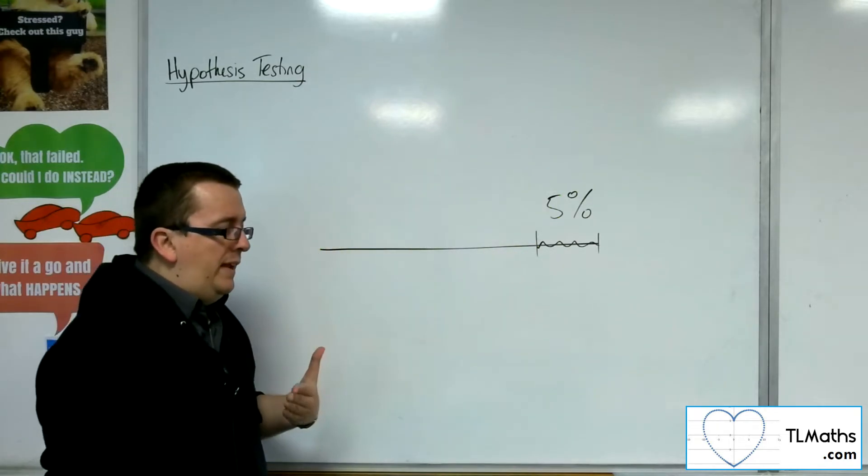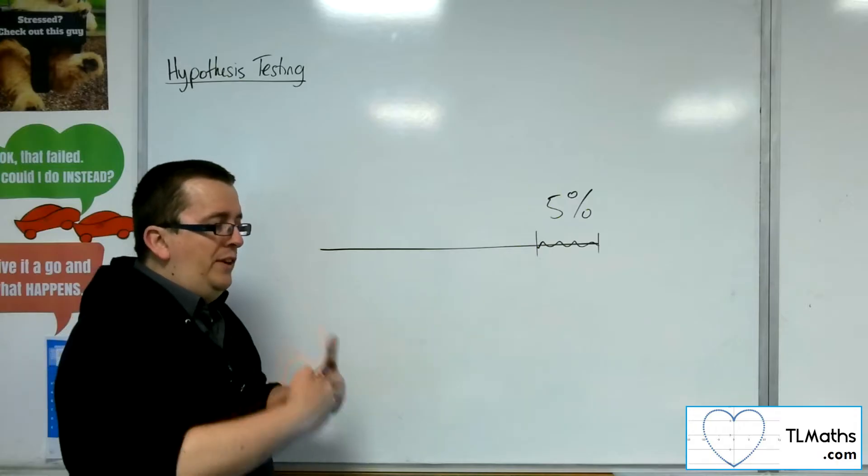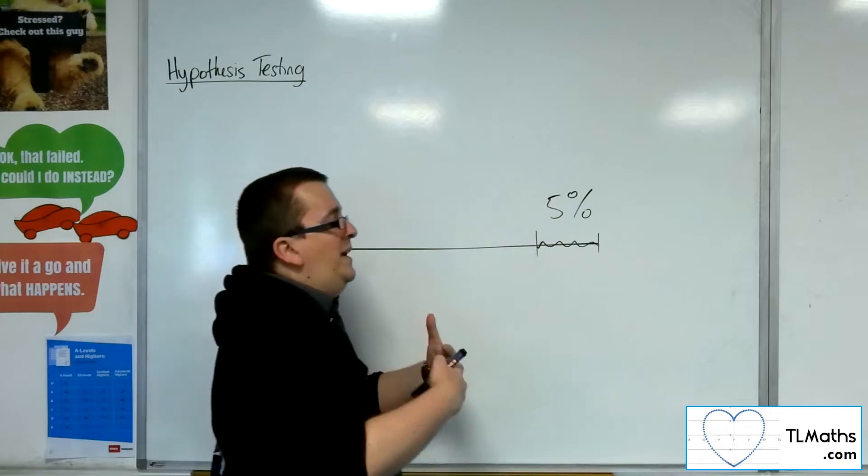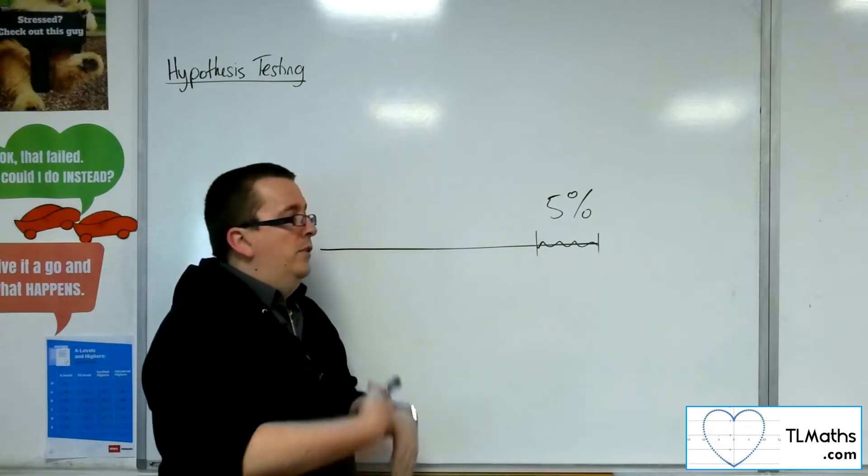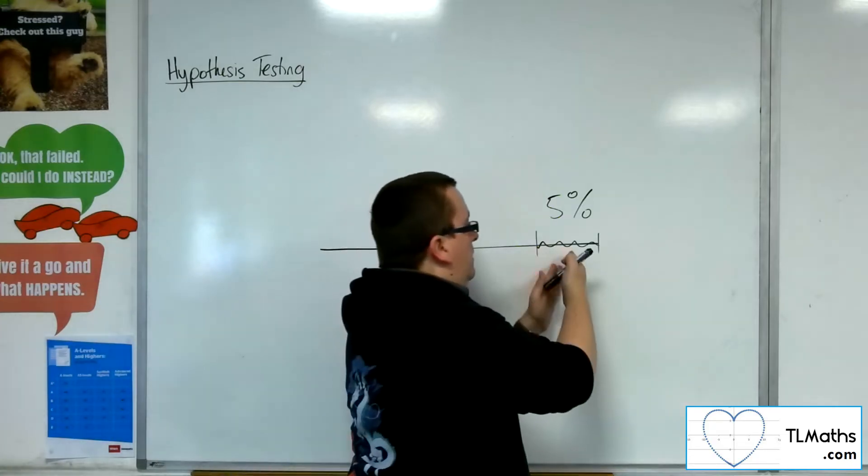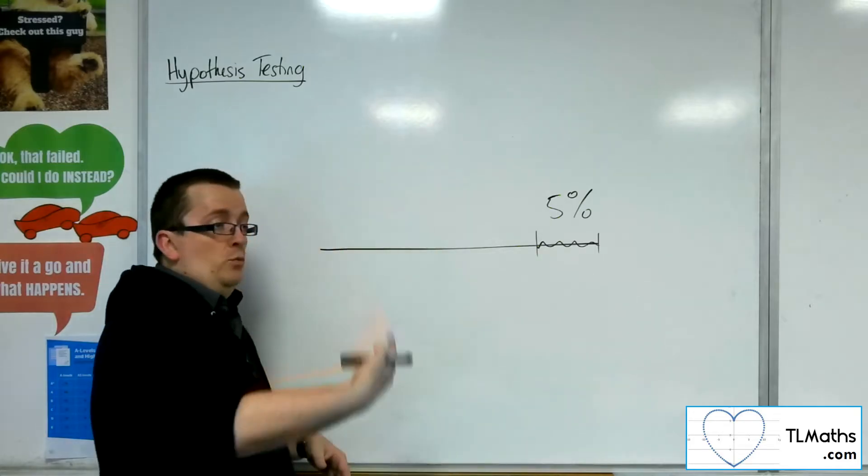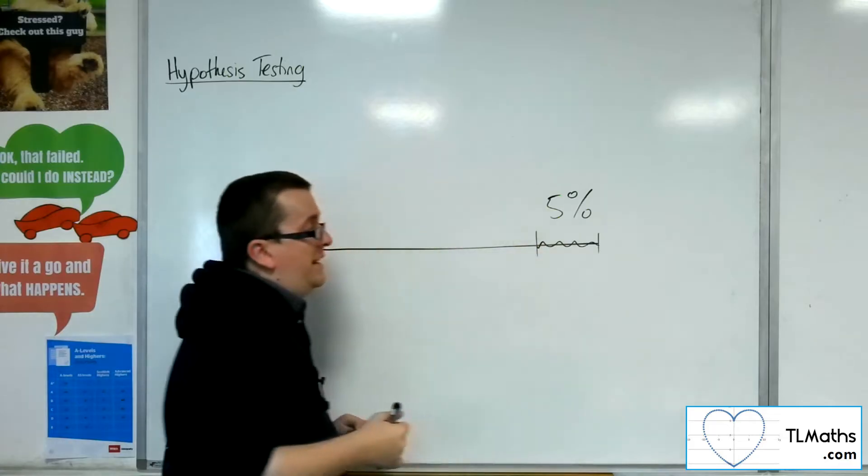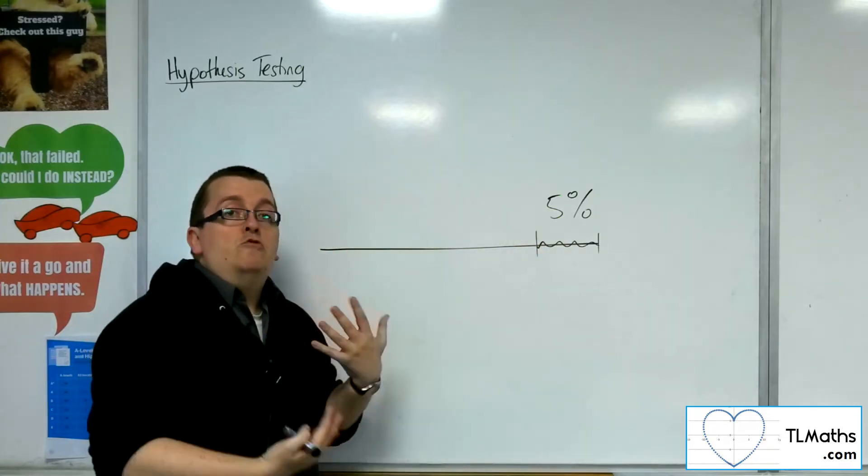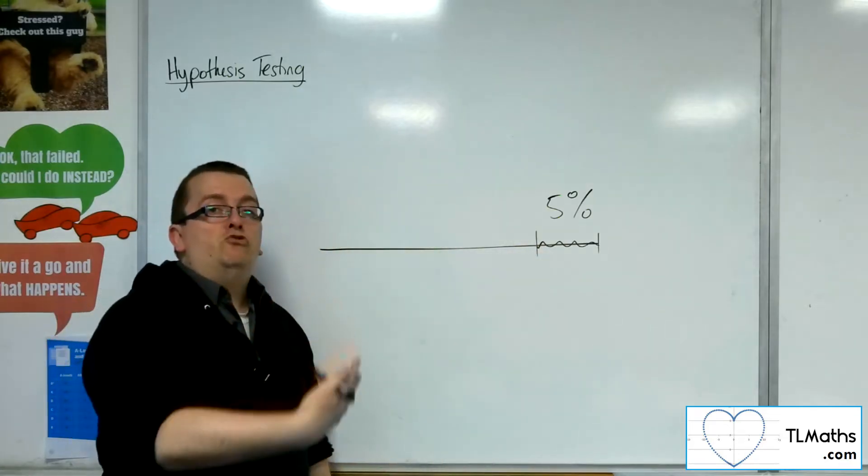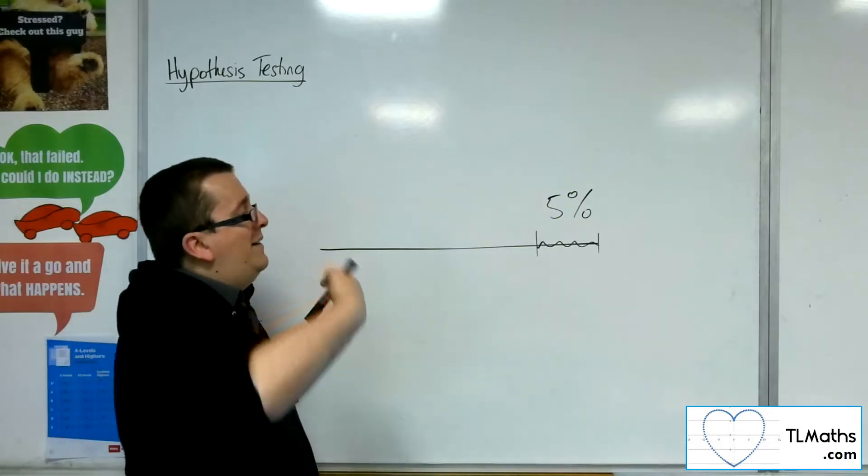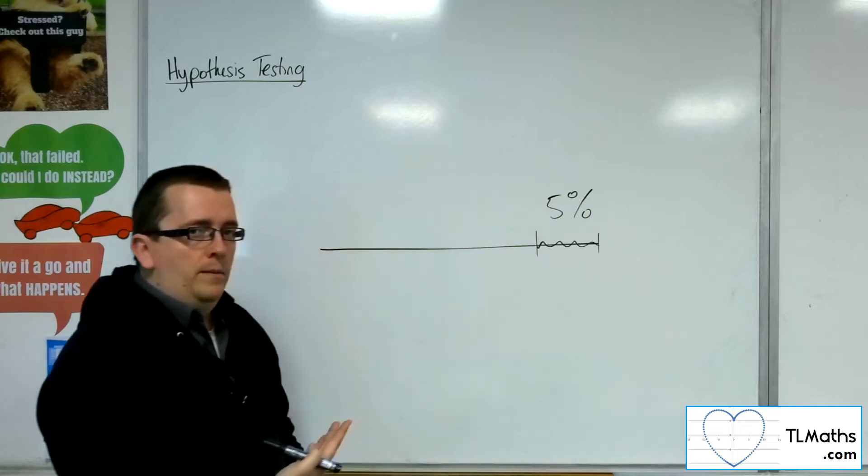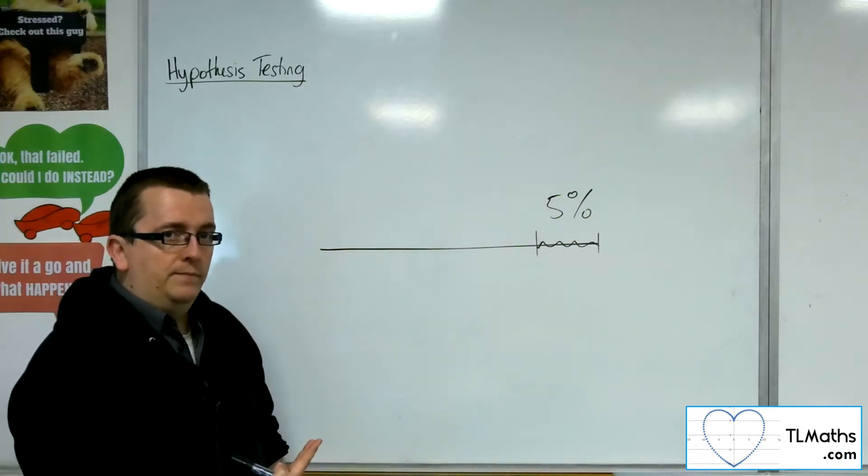And what we'd be saying is that we set the significance level to a point so that if we collected data that appeared in that significance level, so the percentage that we got was less than that, so it was within that significance level, then we would be saying that that result is significant. That is an extreme result. And so, you would have evidence to suggest that the original null hypothesis was incorrect.